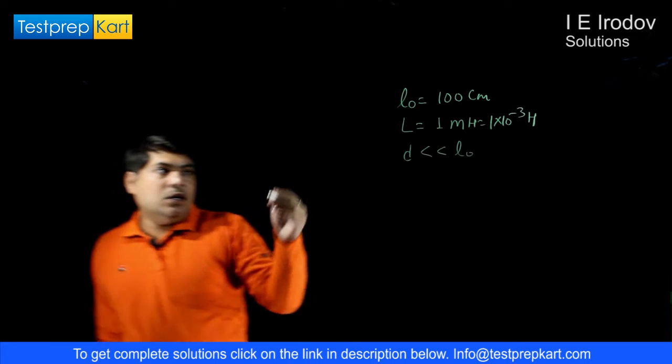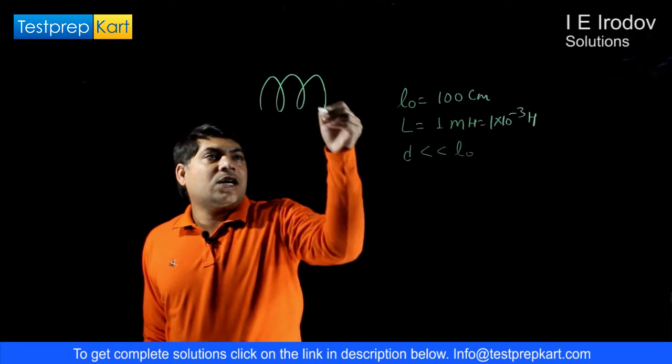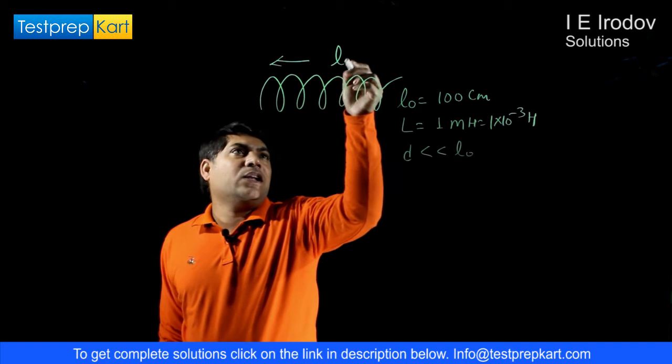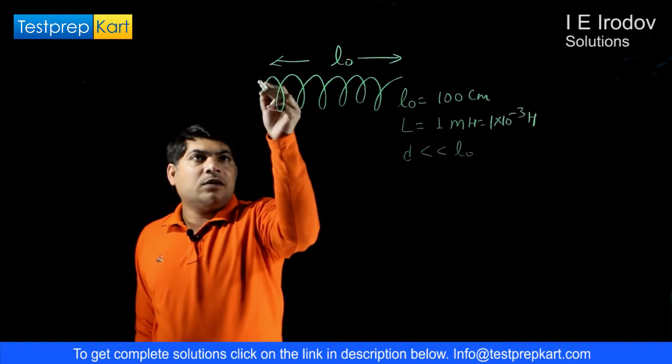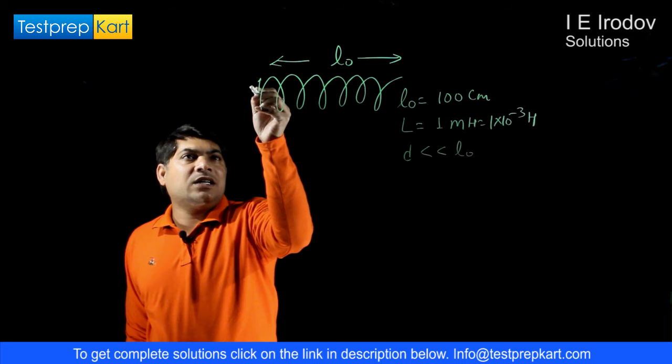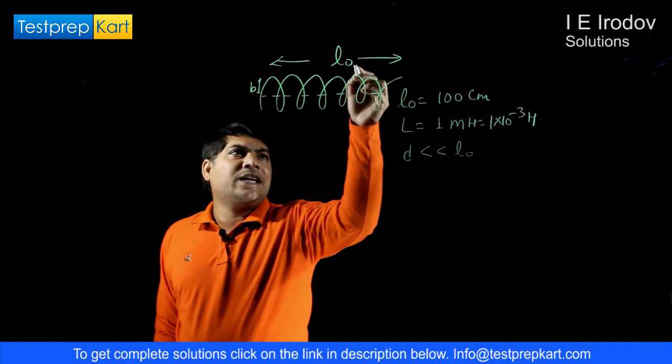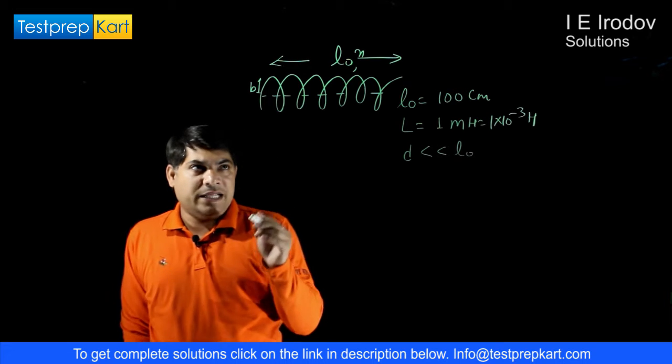So suppose this is our solenoid, its length L₀ is given. Let us take the radius as B for this solenoid and there are n number of turns per unit length.